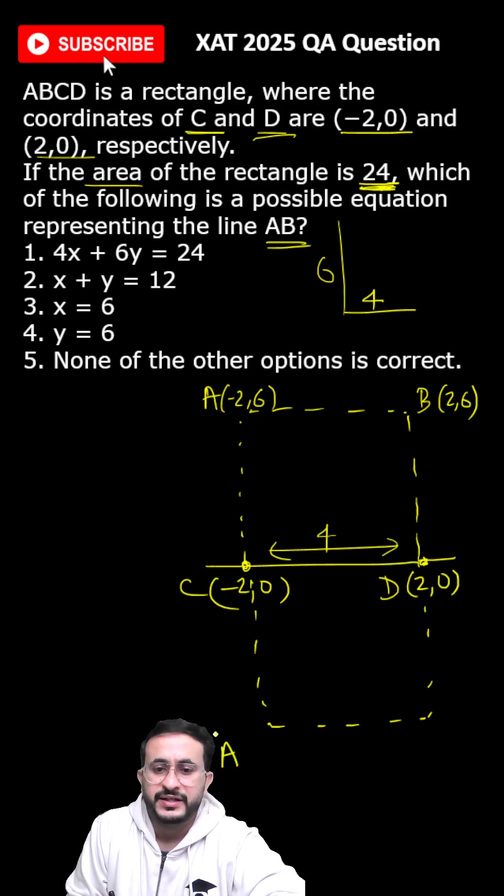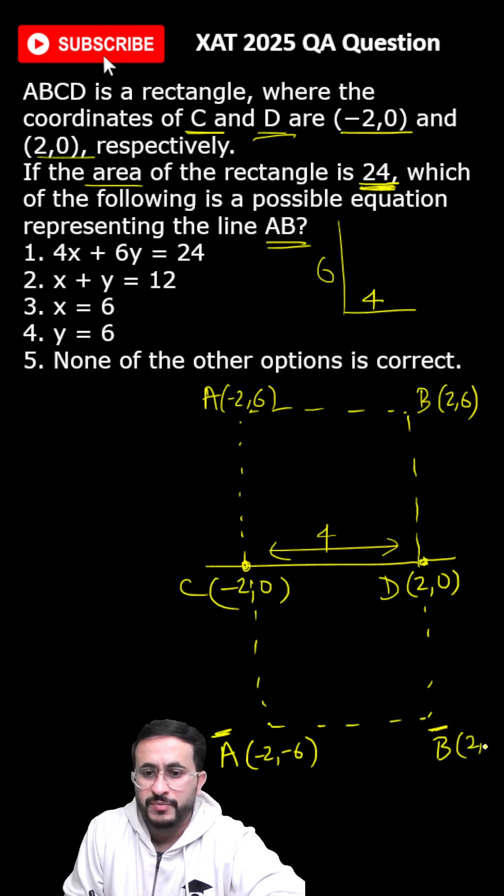Similarly, if you take, let us call it A' and B', here we will have (-2,-6) and this will be (2,-6).